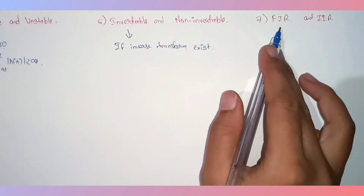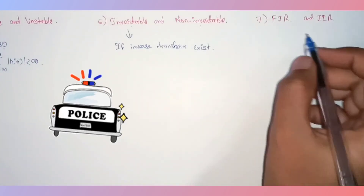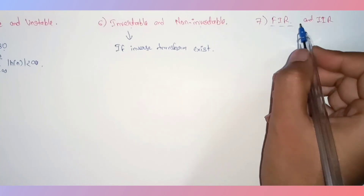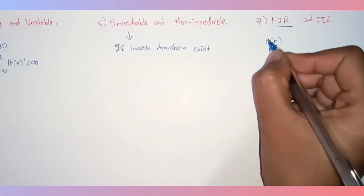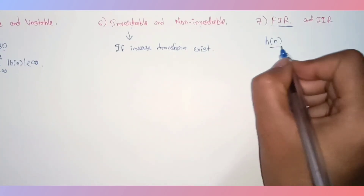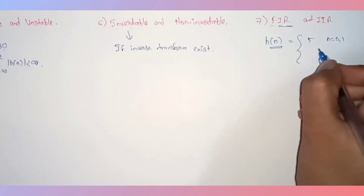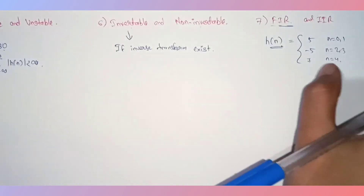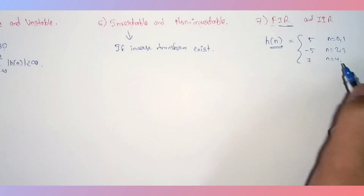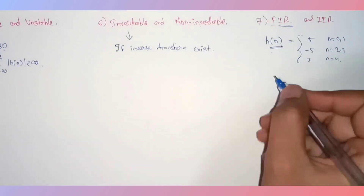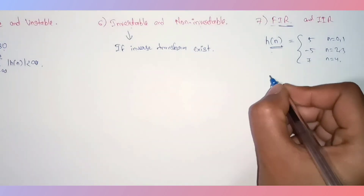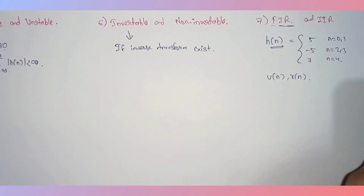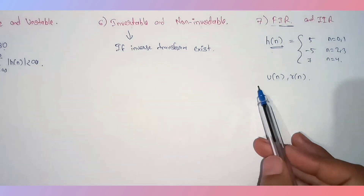FIR stands for Finite Impulse Response — not the police report! The impulse response h(n) can be finite or infinite. If h(n) has finite values for a limited set of n (for example, 5 for n=0,1; −5 for n=2,3; 7 for n=4), the system is an FIR system. If the impulse response is of infinite duration — like u(n) or r(n) — then the system is an IIR, or Infinite Impulse Response system.